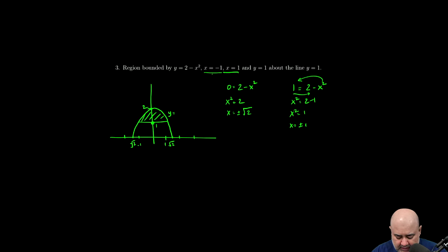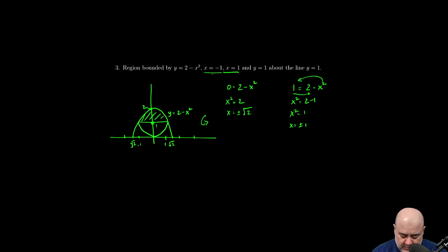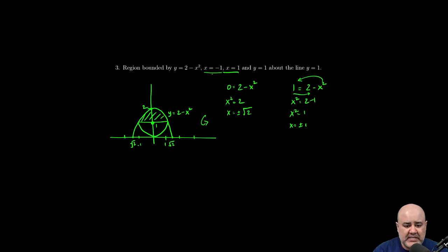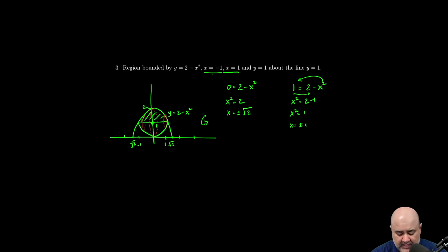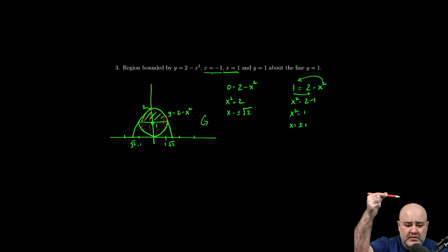This is my function, y equals 2 minus x squared. The first thing I'm going to do is reflect it about my axis of rotation, which is y equals 1. Because of the symmetry, I'm going to get the same shape just flipped upside down. Now I need to draw three trace paths: this point goes down and back out, this point goes down to the axis and turns around, and this point goes down to about here and back. Those points go above y = 1, below y = 1, behind the screen, and come back — that represents the revolution.